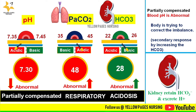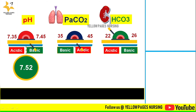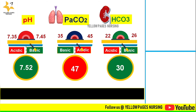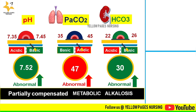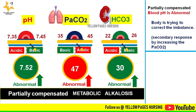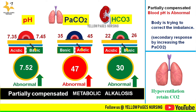Next example: pH is 7.52, PaCO2 is 47, and bicarbonate is 30. pH is increased indicating alkalosis; bicarbonate is also increased — basic along with basic — so this is metabolic alkalosis. PaCO2 is also abnormally elevated above normal. This is partially compensated metabolic alkalosis. The respiratory system compensates by hypoventilation, retaining carbon dioxide and increasing PaCO2 beyond the normal range.